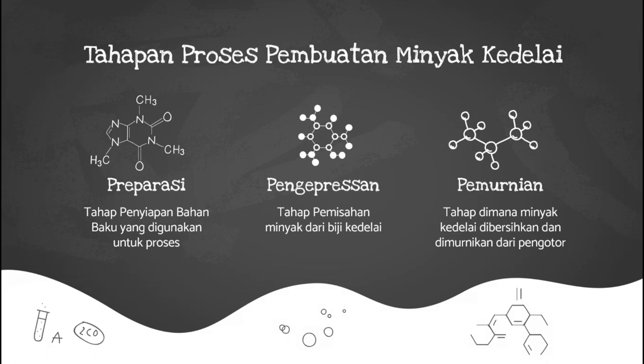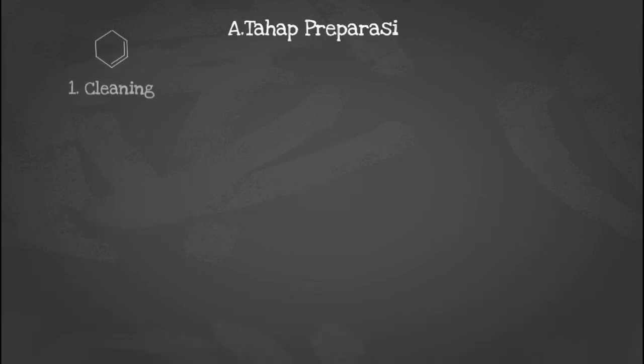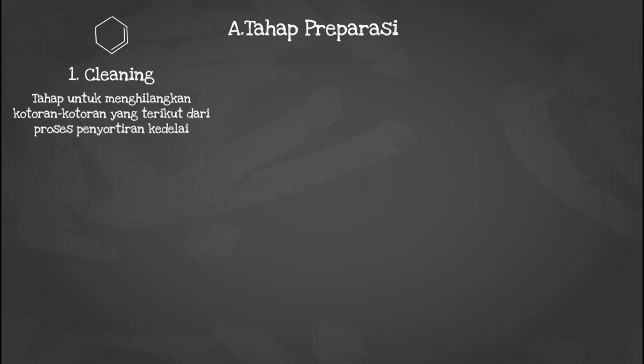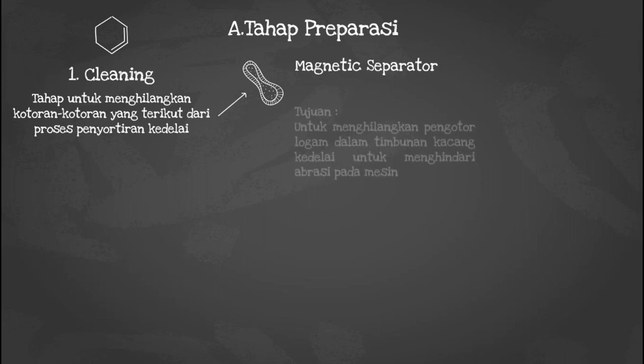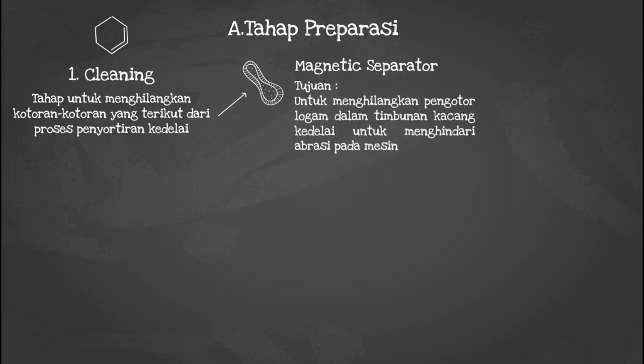Kita akan membahas mengenai tahapan preparasi terlebih dahulu. Tahapan preparasi yang pertama adalah cleaning, untuk menghilangkan kotoran-kotoran yang terikut dari proses penyortiran. Cleaning dibagi menjadi dua tahapan: yang pertama adalah magnetic separator, bertujuan untuk menghilangkan pengotor logam seperti paku ataupun kawat dalam timbunan kacang kedelai, untuk menghindari abrasi pada mesin.